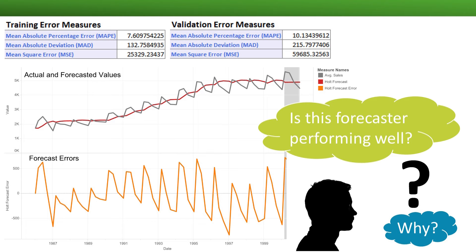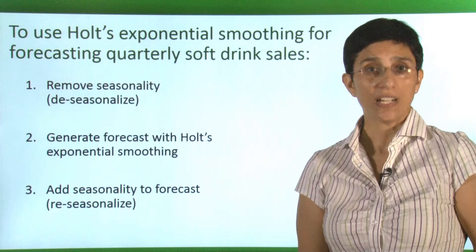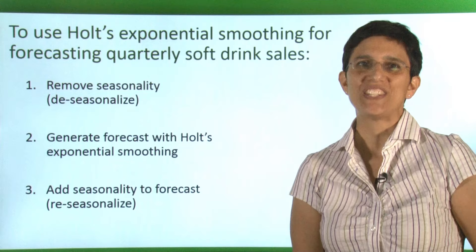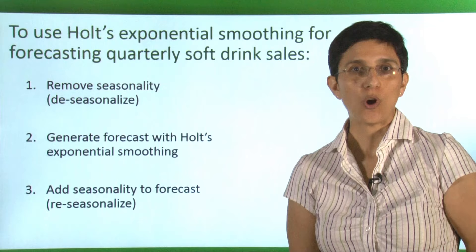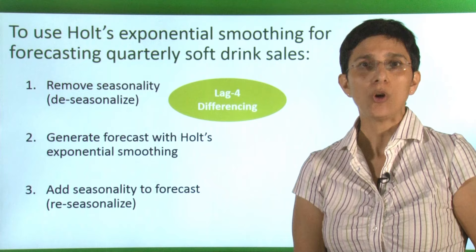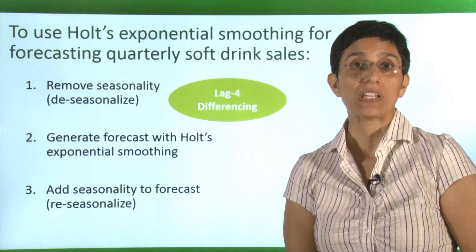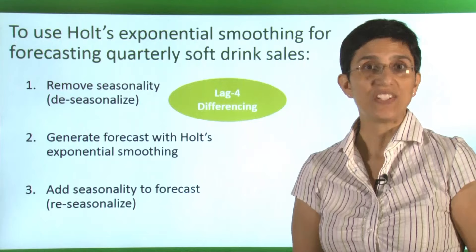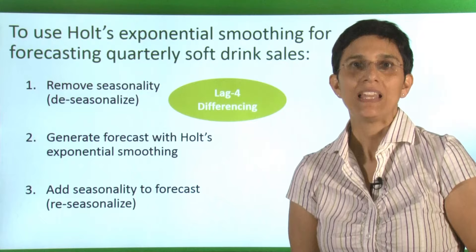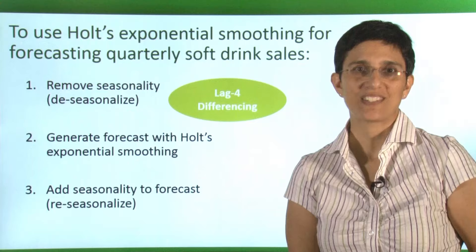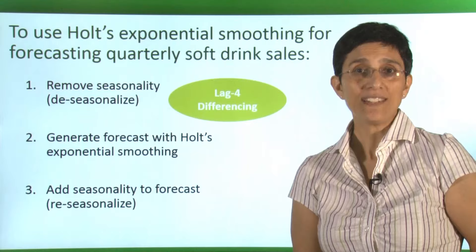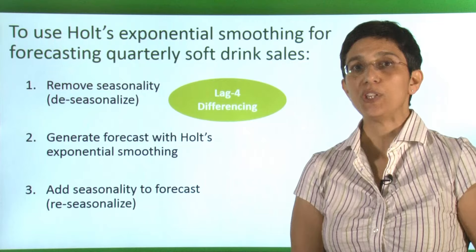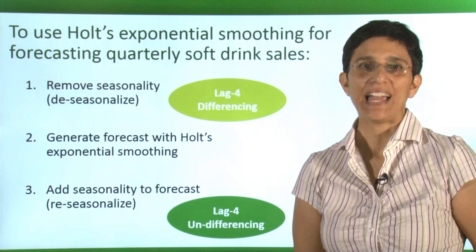Can we do better for these data using Holt's exponential smoothing? Even if our series contains seasonality, we can still use Holt's if we remove the seasonality first — a process called de-seasonalizing. For example, with quarterly data we might use lag-4 differencing to remove quarterly seasonality. We then apply Holt's exponential smoothing to the de-seasonalized series, generate forecasts, and finally re-seasonalize the forecasts by reversing the original operation — in this case, undifferencing at the same lag.